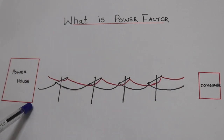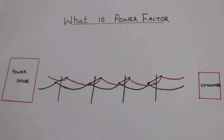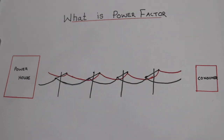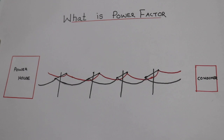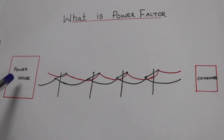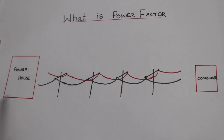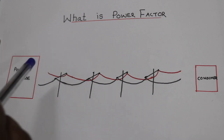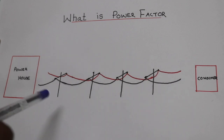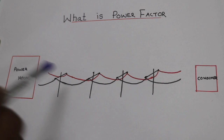When we consider the consumer — whether it is pure resistance, inductive, or capacitive — power flows from the source to the consumer. The power factor equals true power divided by apparent power. The apparent power is the total power flowing in both directions, and the true power is the net useful power.